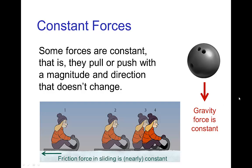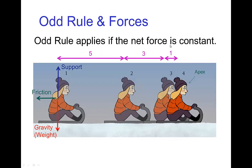There are many situations when we have a constant force. In that case, the constant force pulls or pushes on an object with a constant magnitude and in a constant direction. Two common examples: the force of gravity is a constant force, and it turns out that sliding friction is nearly a constant force. The connection with what we've discussed in terms of the odd rule is that the odd rule applies whenever the net force is constant.